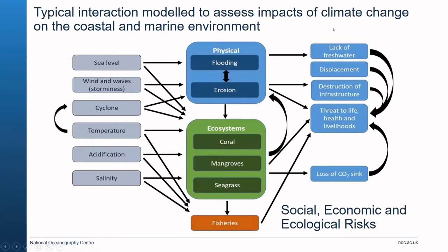Models are often used to understand interactions between different processes and to collect evidence. These processes include sea level change, winds, waves, cyclones, temperature change, ocean acidification, and salinity. By modelling these processes we start to understand physical impacts — flooding and erosion — but also impacts on ecosystems such as corals, mangroves, and seagrasses, which then helps us plan for fisheries, communities, and island-wide coastal management.